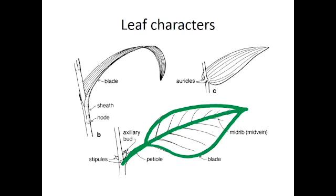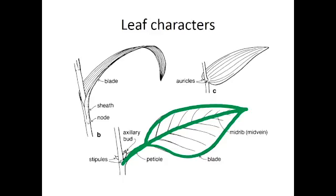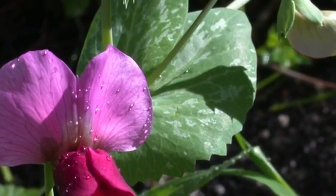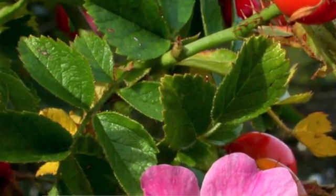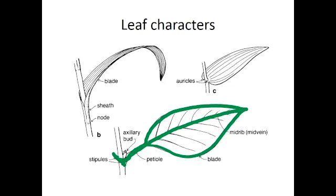In families like the roses and the peas, some of these leaves also have little leaf-like outgrowths at the base of the petiole. Where the petiole joins onto the stem, you'll find a little auxiliary bud, which can grow out into a new shoot system or a new branch or become flowers.